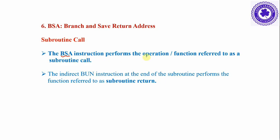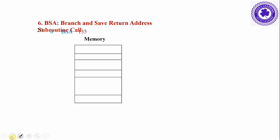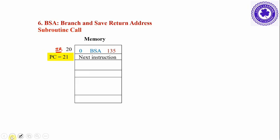The BSA instruction performs the subroutine call function. The indirect BUN instruction at the end of the subroutine performs the subroutine return. For example, assume the computer is currently executing the 20th instruction. This 20th instruction is in the IR register and its next instruction address (21) is available in the PC.